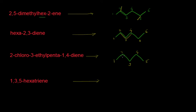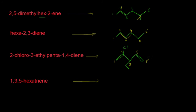We have two substituents: one is chloro at position number 2, and at position number 3 we have an ethyl group. So the overall structure of this molecule is 2-chloro-3-ethyl-penta-1,4-diene.